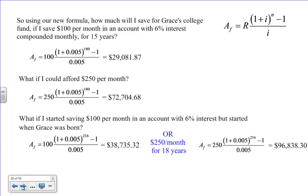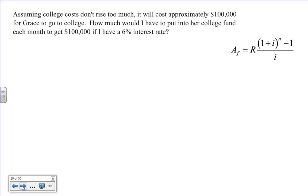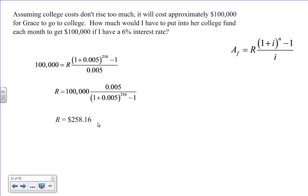Now, we can also do this. We can assume that college costs won't rise too much, hopefully, and it'll cost approximately $100,000 for Grace to go to college. How much would I have to put into our college fund each month to get to $100,000 if I have a 6% interest rate? Well, we have this formula here, but we can flip it around and put in what we know, multiply by the reciprocal, and get R equals 100,000 times 0.005 over (1 plus 0.005) to the 216 minus 1, and that's $258.16. So, if I were to save $258.16 for 18 years, that would get me pretty close to the $100,000 that I was looking for.